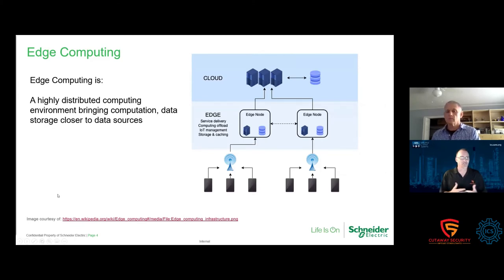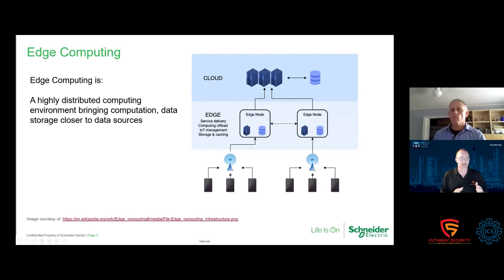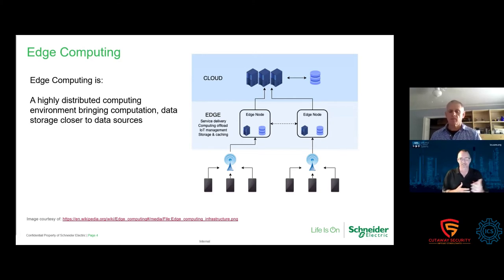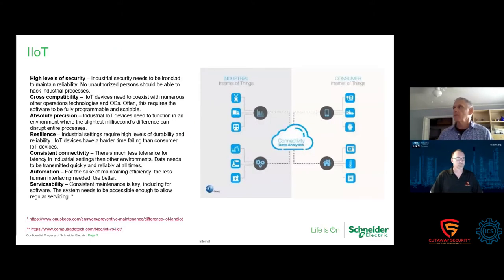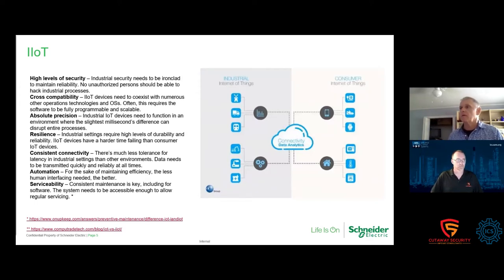We just had a network glitch, but we were finishing up talking about edge computing — I think we covered the edge cases of edge computing. Please continue, Daniel. Now we'll talk about the difference between IoT and IIoT — the Industrial Internet of Things versus the Internet of Things. The Industrial Internet of Things is kind of a subset.